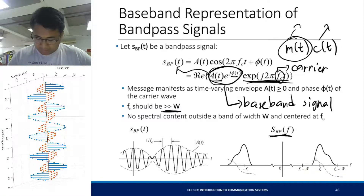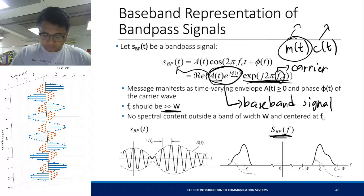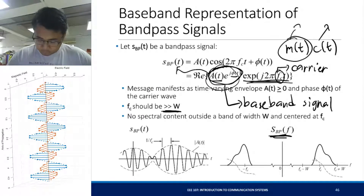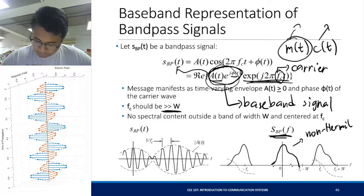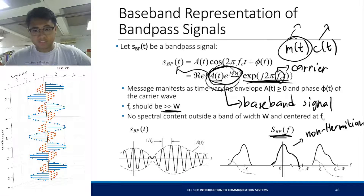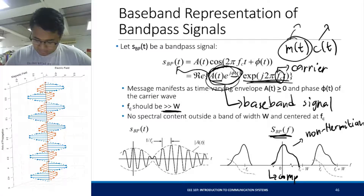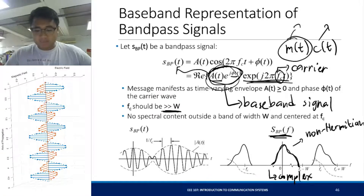If this is the spectrum of your bandpass signal and we convert that to a baseband signal, you will see that the spectrum will be translated to baseband. It will become a spectrum which is non-Hermitian in symmetry — it does not satisfy Hermitian symmetry, which makes this a complex signal, not a real signal. With this complex frequency spectrum, we can easily solve for and observe the different properties of the signal.